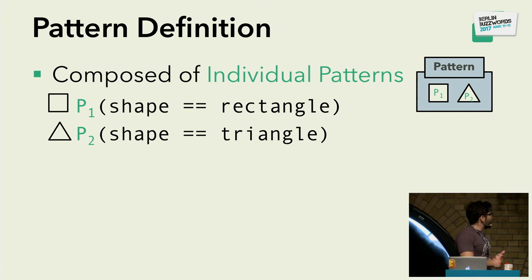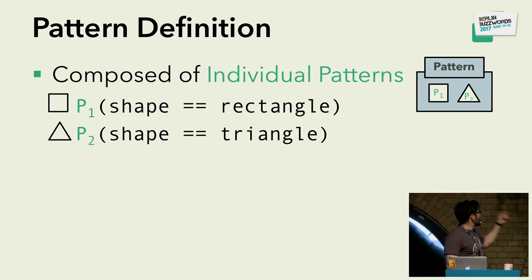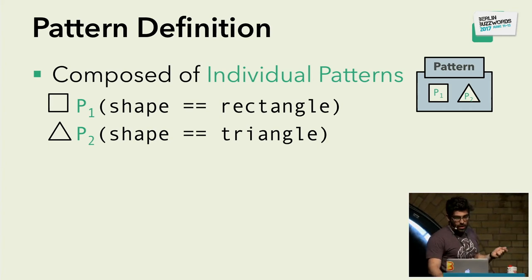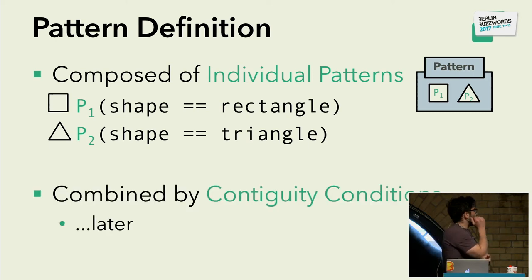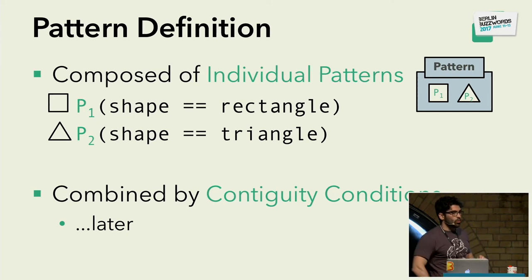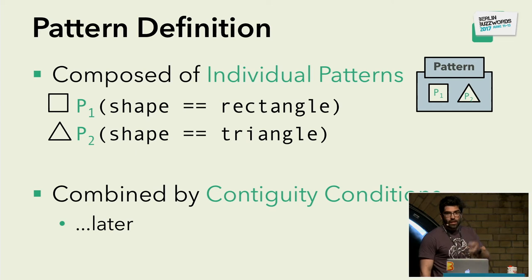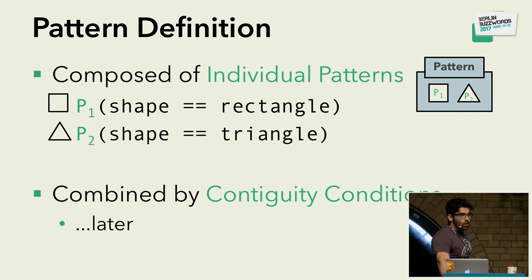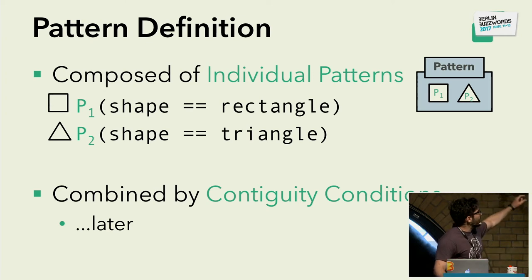Taking our previous pattern — detecting rectangles strictly followed by triangles of the same color — the first observation is that our complex pattern is composed of individual patterns, each searching for a specific type of event. P1 searches for rectangles, P2 searches for triangles. These individual patterns are combined into more complex ones based on continuity conditions. Continuity conditions describe how you select relevant events from a stream that mixes relevant and irrelevant events.